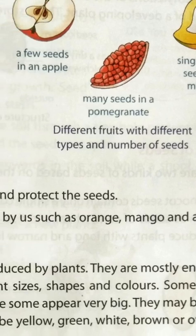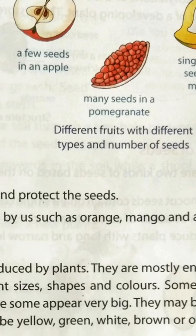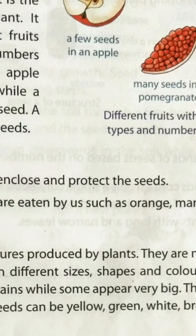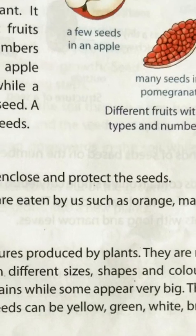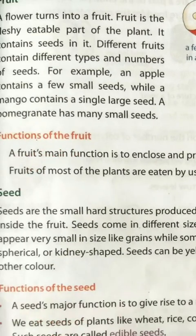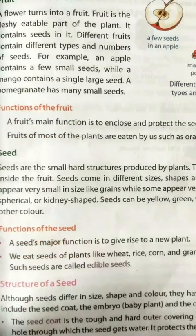Apple contains a few small seeds, while a mango contains a single large seed. A pomegranate has many small seeds.